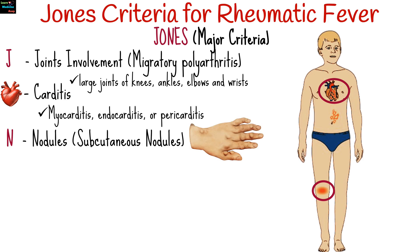N is for subcutaneous nodules, which are painless, firm collections of collagen fibers over bones or tendons, typically found over extensor surfaces like the back of the wrist, outside elbow, and front of the knees.